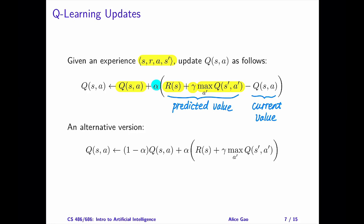Let's rearrange the terms and write the update rule in another way. This alternative version might appear more intuitive for you. In this alternative version, we are changing the Q value to a linear combination of two terms. The first term is the current Q value. The second term is the predicted Q value based on the observed transition. Alpha controls the weights of the two terms.